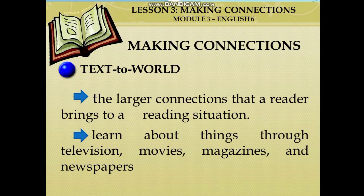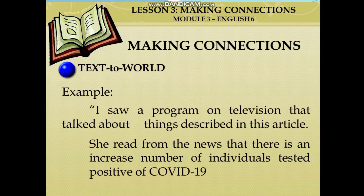The last connection is text-to-world. It is the larger connections that a reader brings to a reading situation. We learn about things through television, movies, magazines, and newspapers. Example of text-to-world: I saw a program on television that talked about things described in this article. She read from the news that there is an increased number of individuals tested positive of COVID-19. They are two examples of text-to-world because there is a connection between the text and the real world.